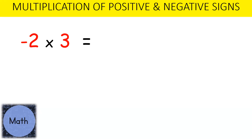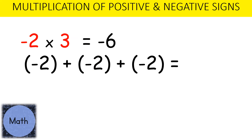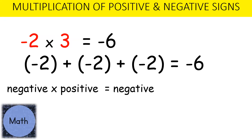Negative 2 multiplied by positive 3: because the signs are different we'll end up with a negative, and 2 multiplied by 3 gives us 6. Another way to look at this — we can repeatedly add negative 2 together 3 times, so negative 2 plus negative 2 plus negative 2 gives us negative 6. A negative multiplied by a positive gives us a negative.